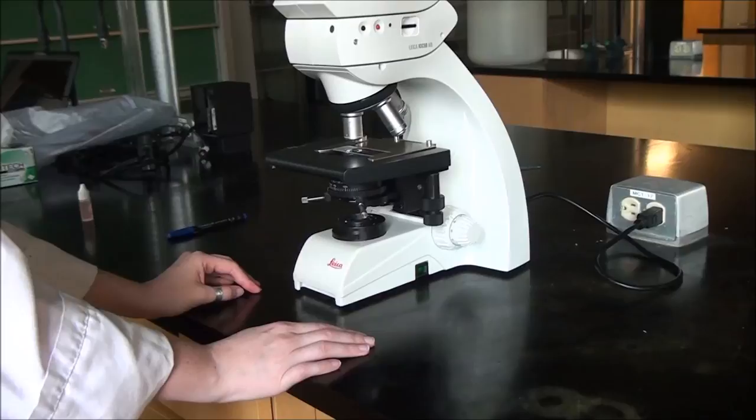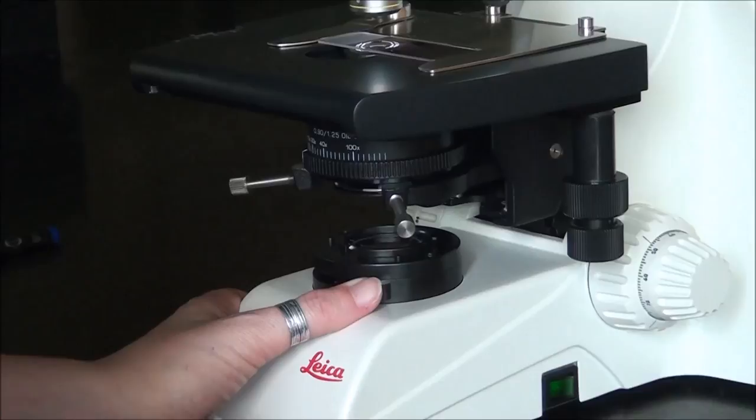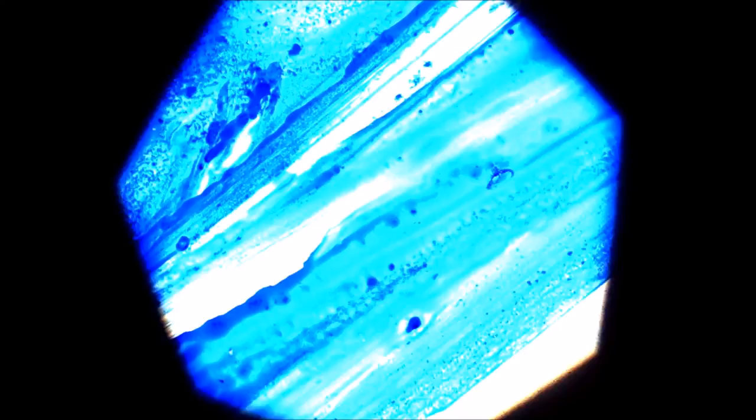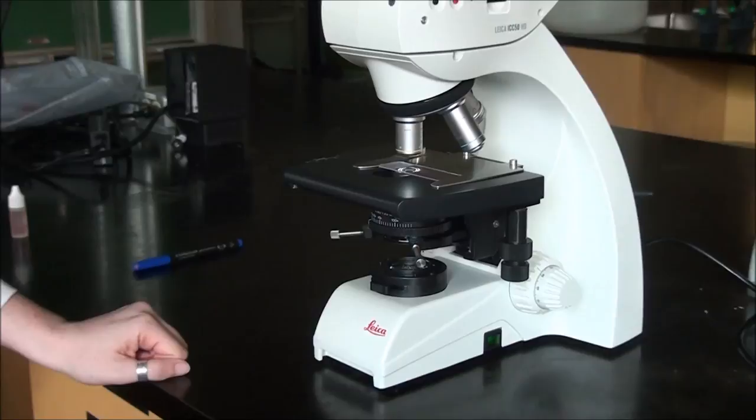I'm going to move to the field diaphragm because everything is aligned. Now it is a matter of getting enough light for contrast and resolution balance. To adjust the field diaphragm, we're going to look through our ocular lenses and open the field diaphragm so that the entire field of view is lit up.